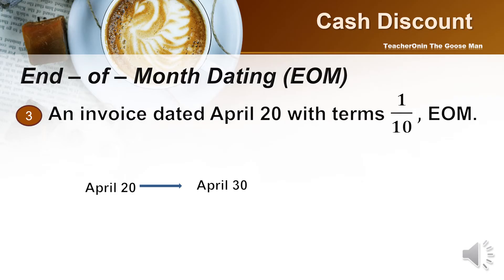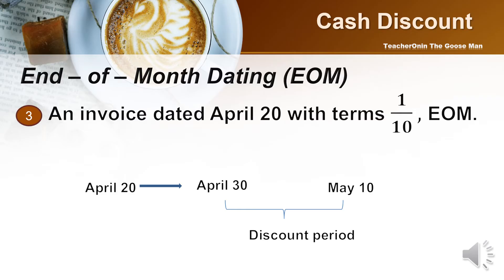Then, after April 30, I add 10 days — this is the discount period. From April 30, there are 10 days. So if I can settle my obligation on or before May 10, I can avail of the 1% cash discount.